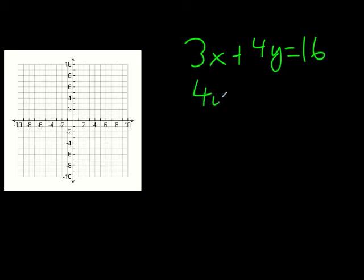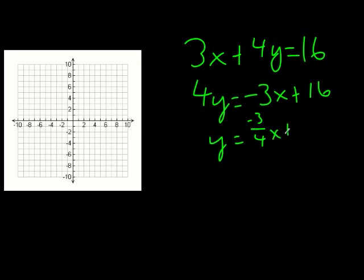I'm going to do one more example. We're going to use slope-intercept form to graph 3x+4y=16. First, isolating y: we subtract 3x to get 4y=-3x+16, then divide by 4 to get y=-3/4x+4. This is our slope-intercept form.